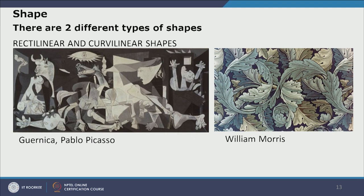In the first example we see Guernica by Pablo Picasso — a painting under the cubist movement — which has lot of angular characteristics of shape, straight lines, and angles. This is rectilinear. On the other hand, William Morris's design, which falls under the arts and crafts movement, has lot of curvilinear shapes with more curves and less angles.